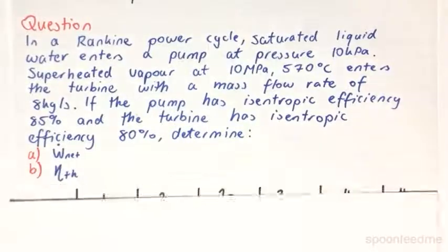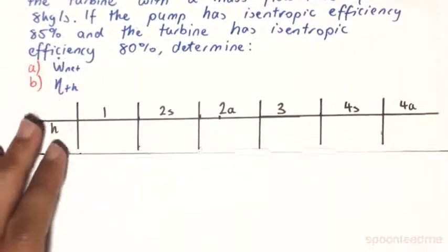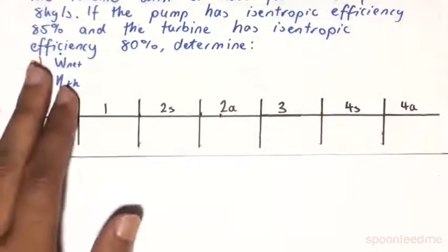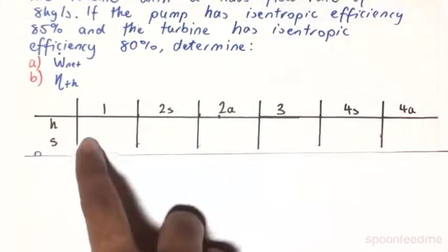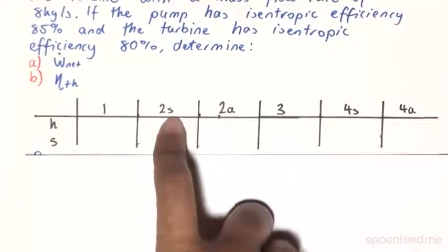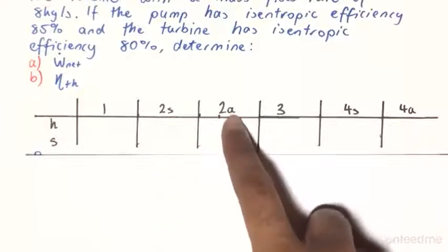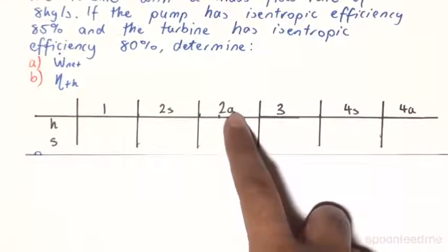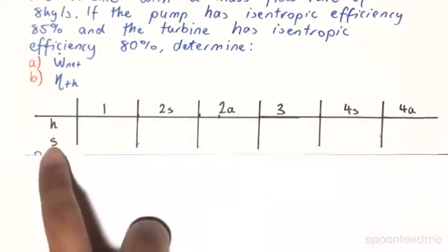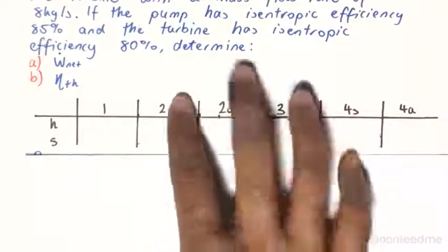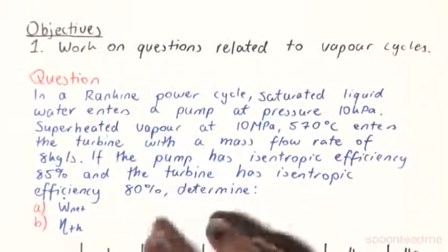So to begin, many a time for these questions you will have these tables of each state with the S denoting the isentropic state and the A denoting the actual state. And what you will be mapping or tabulating are the enthalpy values and the entropy values. Since this situation, this Rankine power cycle is...